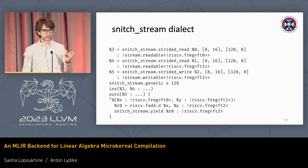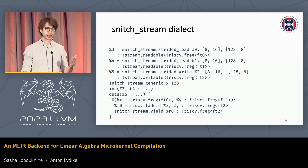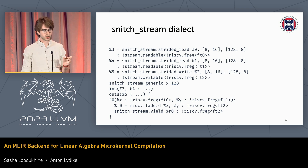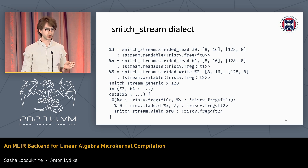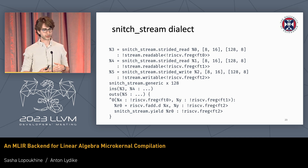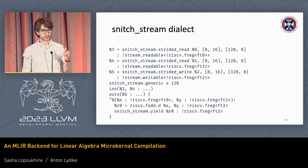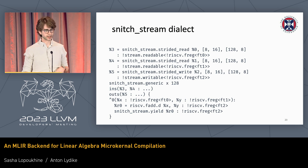The body of the function actually changed from ARITH to RISC-V. This RISC-V FADD corresponds exactly to the assembly operation we want at the end, and the stream generic still represents our loop, with read and write operations.